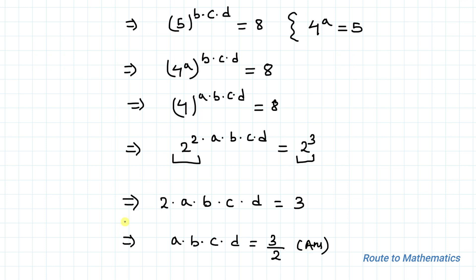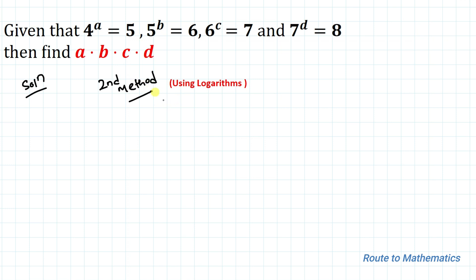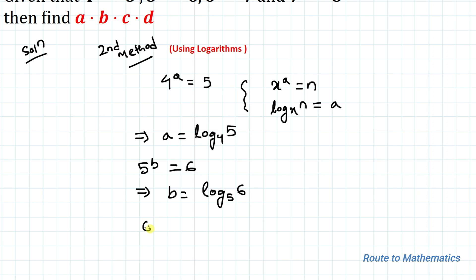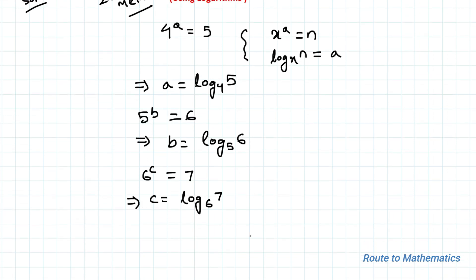Now let's move to the second method using logarithms. We know the rule: x to the power a equals n can be written as log base x of n equals a. Applying this rule: our first equation gives a equals log base 4 of 5; our second gives b equals log base 5 of 6; our third gives c equals log base 6 of 7; and our fourth gives d equals log base 7 of 8.